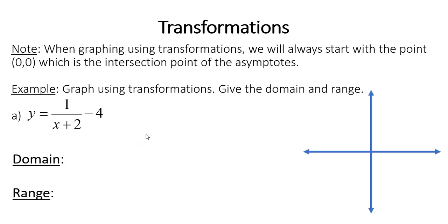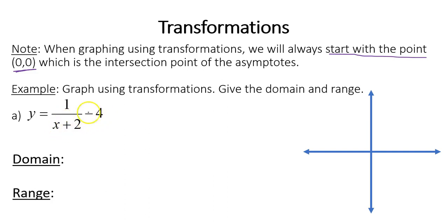So how do you graph these parent functions using transformations? When graphing using transformations, we will always start with the point 0, 0, but understand that this point is the intersection point of the asymptotes. In our next example, we're going to graph using transformations and give the domain and range. We have y equals 1 over x plus 2, minus 4. Since x is in the denominator with no quantity squared, the parent function will be 1 over x.